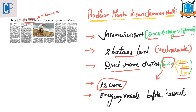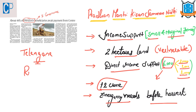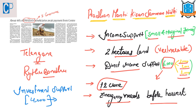Around 12 crore small and marginal farmer families are expected to benefit from PM-KISAN. It will provide assured supplementary income support to the most vulnerable farmer families and help them meet emergency needs before the harvest season. The article also discusses a similar scheme in Telangana called Rythu Bandhu. Under this scheme, the Telangana government provides investment support of 4,000 rupees per acre to every farmer in every season, for the purchase of fertilizers, seeds, pesticides, and labor — covering initial investment needs of every farmer.